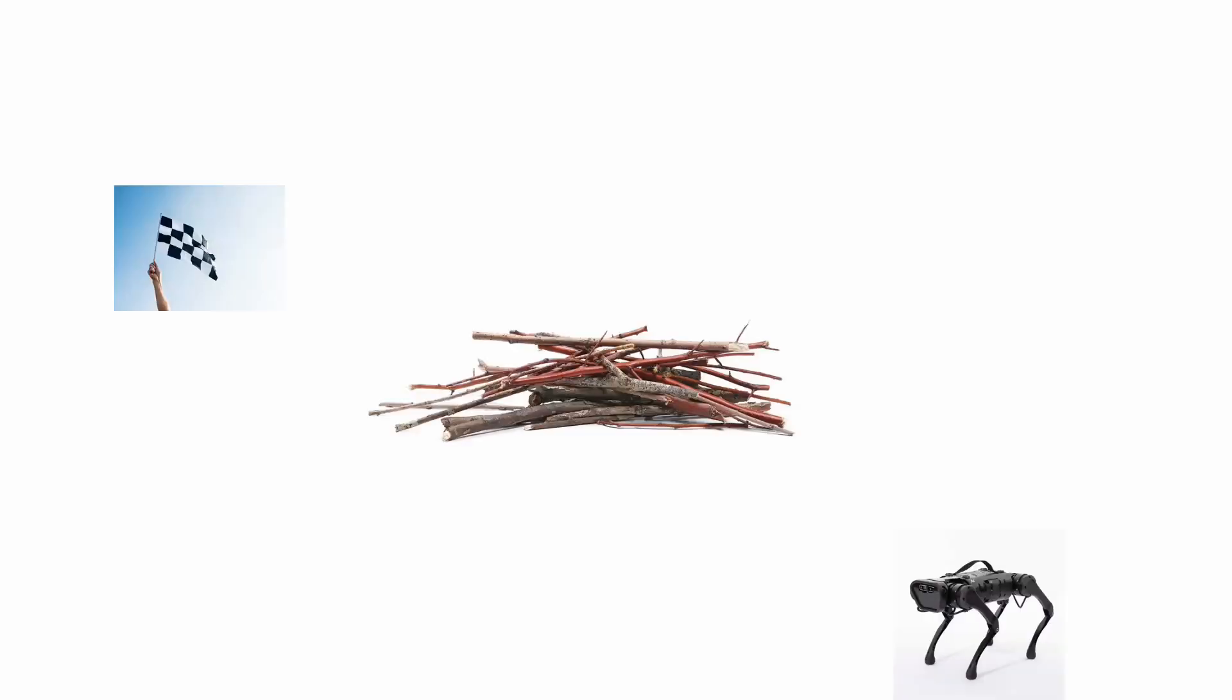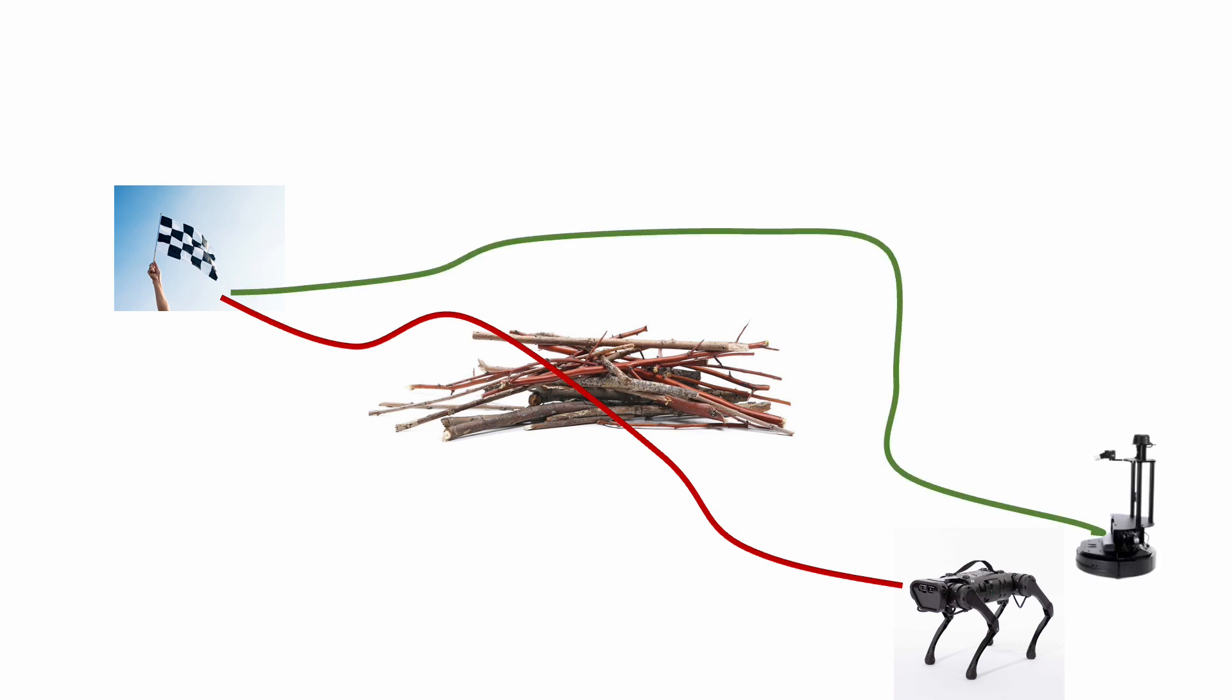While the shared abstraction helps reduce variance in the outputs, the model still needs to infer the capabilities of the robot it's deployed on. For instance, a quadruped may be able to trample on a pile of branches and continue straight towards the goal, whereas a turtlebot may need to plan an alternate path around it, seeking flat ground. This amounts to a system identification process for the GNM to condition its behavior on the capabilities of the robot.